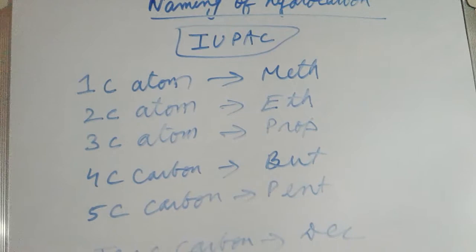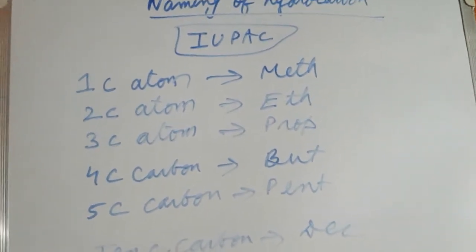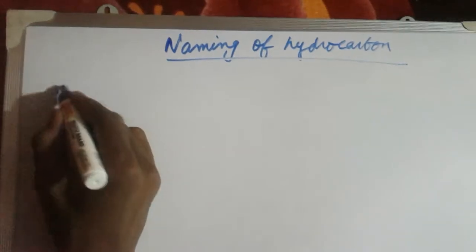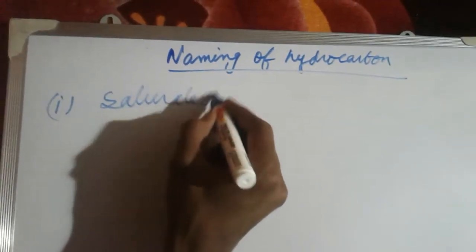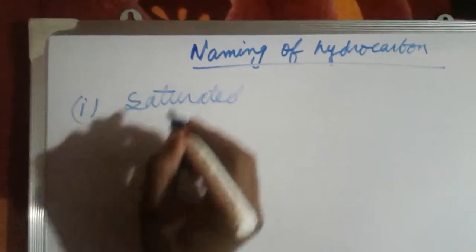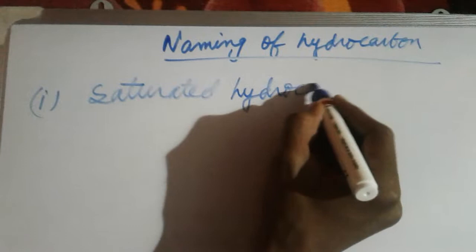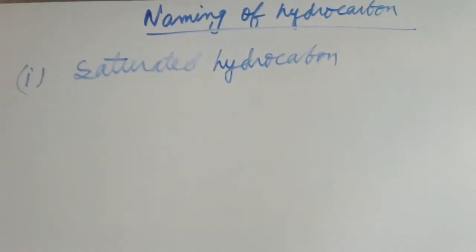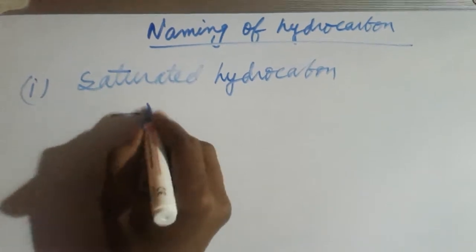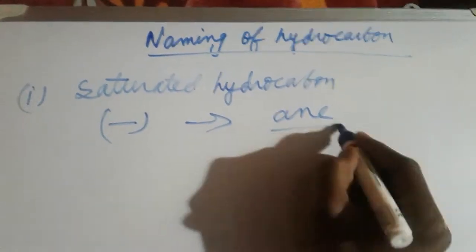Now we will study the suffixes. Saturated hydrocarbons with single bonds have the suffix '-ane.'